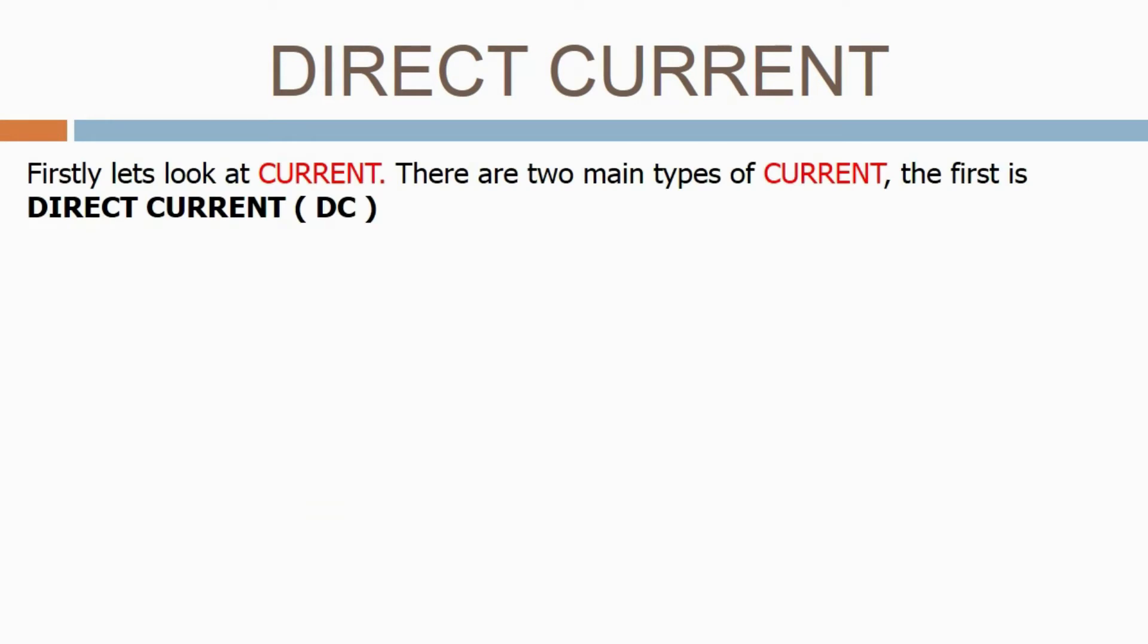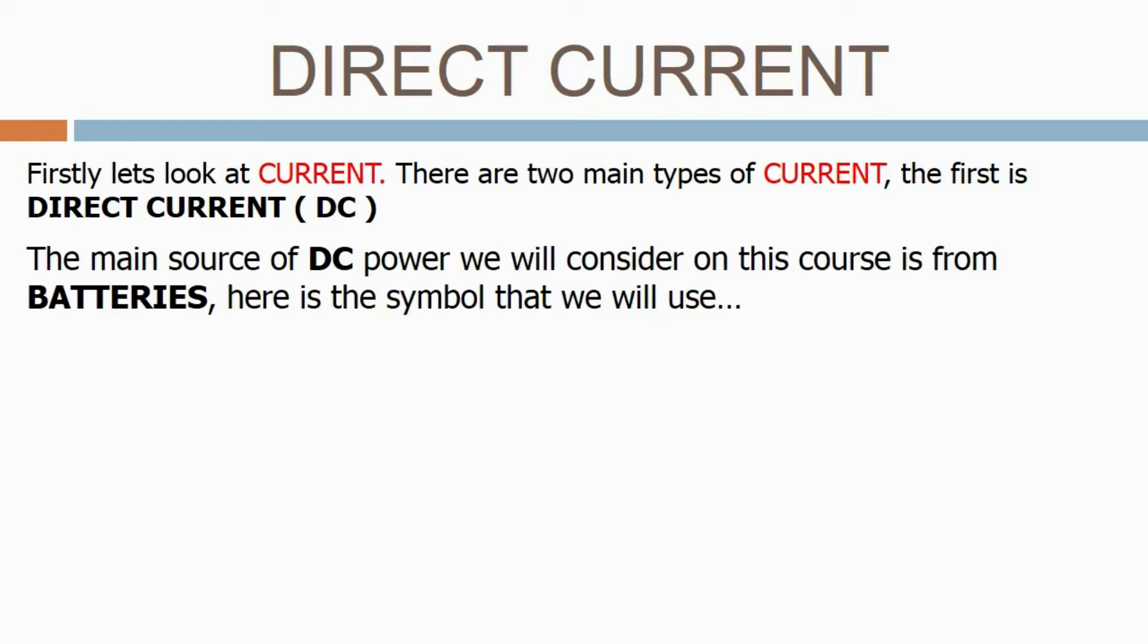Firstly, let's look at the current. There are two main types of current. The first is direct current or DC. The main source of DC power we'll consider on this course is from batteries. Here's the symbol that we'll use.